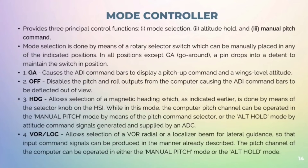OFF disables the pitch and roll outputs from the computer, causing the ADI command bars to be deflected out of view. HDG allows the selection of magnetic heading, done by means of the selector knob on the HSI. While in this mode, the computer pitch channel can be operated in the manual pitch mode by means of the pitch command selector, or in the ALT mode by the attitude command signals generated and supplied by an ADC. VOR or LOC allows selection of the VOR radial and localizer beam for lateral guidance so that the input command signals can be produced accordingly.